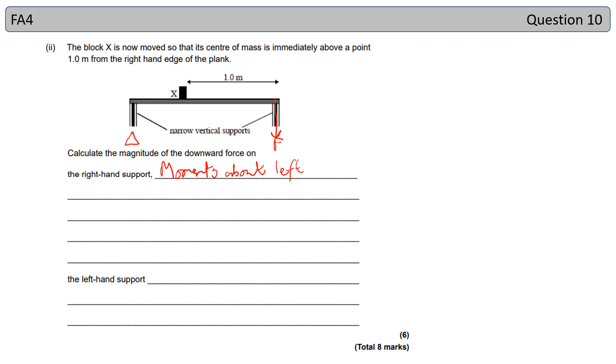And we have got our X acting down. That was our 3G. It's one meter from the right hand end. The whole plank is 1.5 meters. So that means that it is a distance of 0.5 meters from the left hand side.